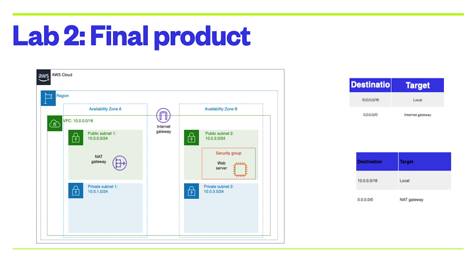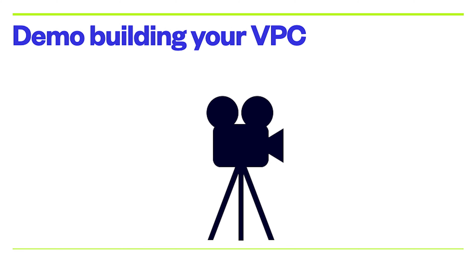Now try to practice what we have learned by building a VPC in the AWS Management Console. In this lab, your task is to create a VPC, create additional subnets as shown in the diagram, configure a route table following the information on the slide, and launch a web server instance. Let me show you how to build a VPC and launch a web server using this demo.